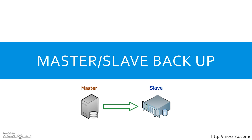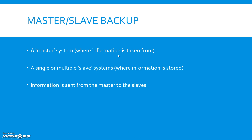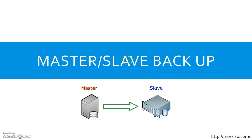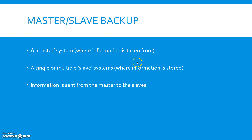The second type is known as master/slave backup. This is when the server is down and the master takes information from the slave. There may be multiple slave systems, connected to one another like a web. Information is normally sent from the master to the slaves, but when the master is down, it will take information from the slaves.